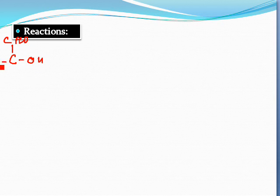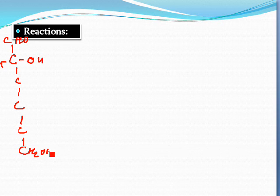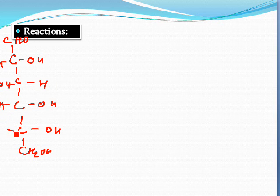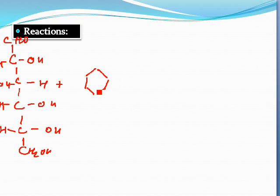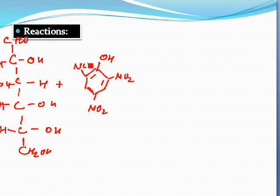Here you can see the reaction. Here is a D-glucose molecule. D-glucose reacts with 2,4,6-trinitrophenol — that is, an OH group with three nitro (NO₂) groups — which is called picric acid.